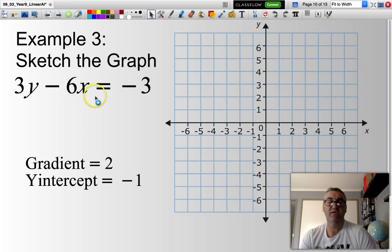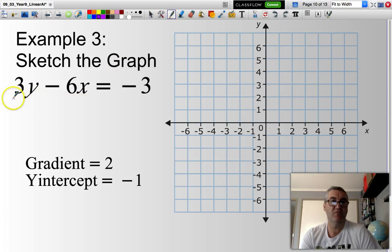If you see an equation like this, 3y minus 6x equals negative 3, you'll have to apply your algebra and put that equation in the form of y equals mx plus b. You cannot just look at this and say the gradient is negative 6 or the y-intercept is negative 3. The first thing I would do is divide everything by 3.